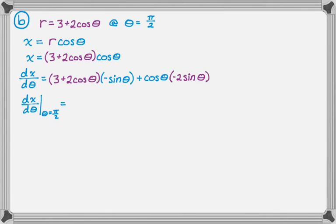So I know that the cosine of pi over two is zero, which is pretty nice. It makes the whole second part drop out, and then the sine of pi over two is one. So this gives me three times negative one plus zero, which is overall just negative three.